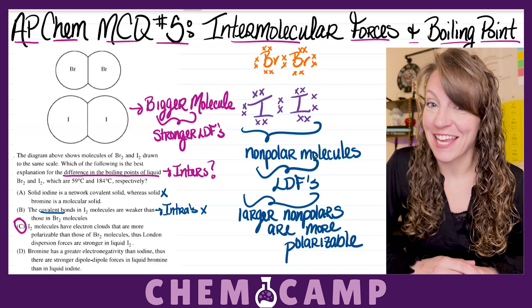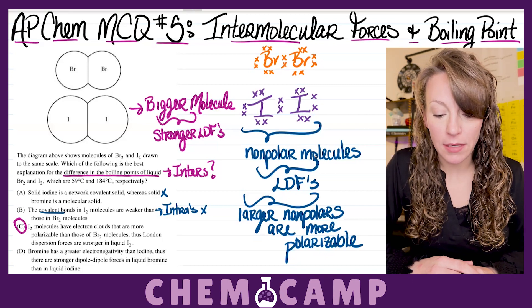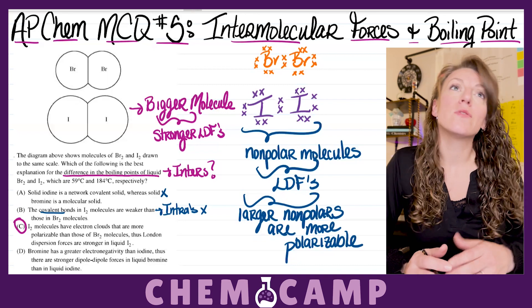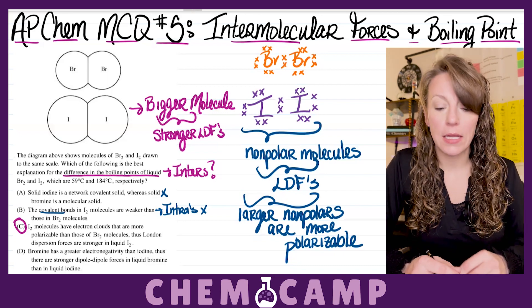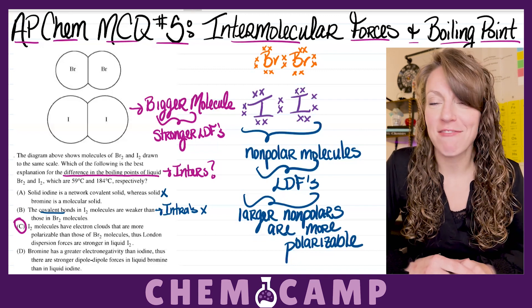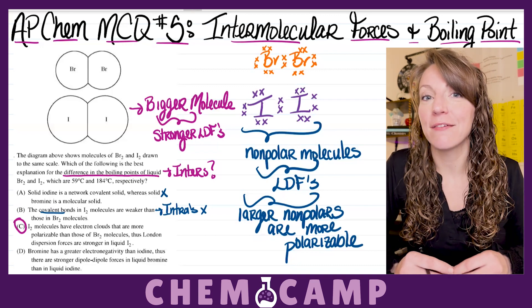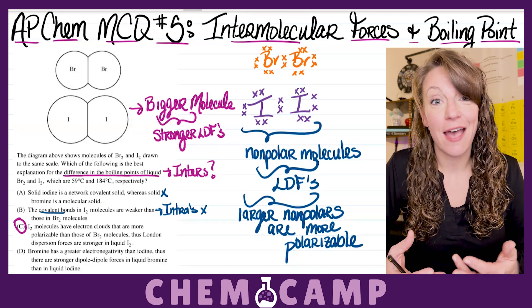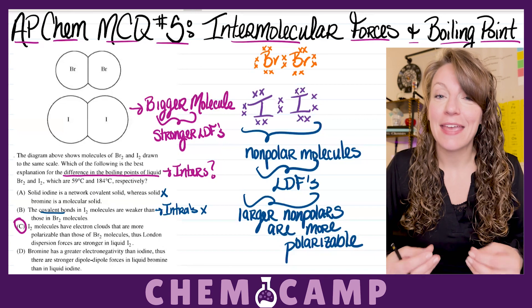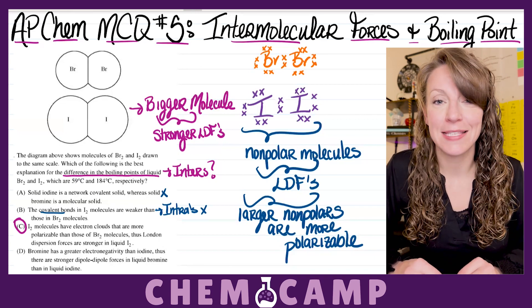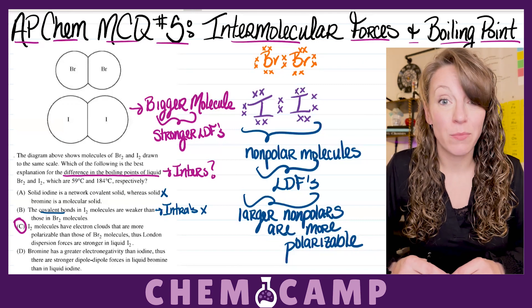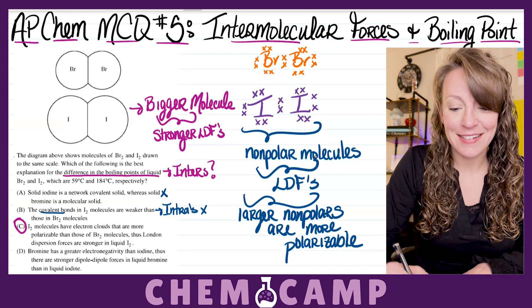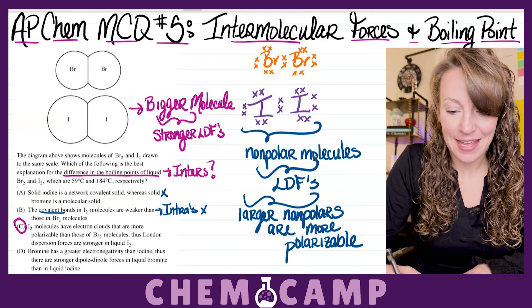Let's just discuss letter D for a second. Letter D says bromine has a greater electronegativity than iodine. Thus, there are stronger dipole-dipole forces in liquid bromine than in liquid iodine. So, the first part of the statement is true. Bromine is higher up in the halogen group. So, therefore, it does have a higher electronegativity. However, that affects the type of bond within the molecule. And since both of these molecules have two of the same type of atom within the molecule, they actually have those nonpolar bonds because they have the exact same electronegativity. And because they're nonpolar, they're not going to experience dipole-dipole forces. They're going to experience those London dispersion forces. So, letter D is also not an option.